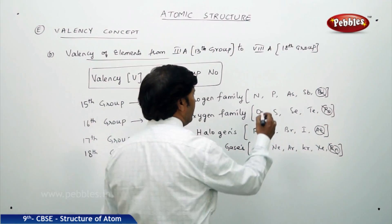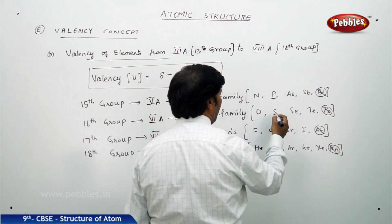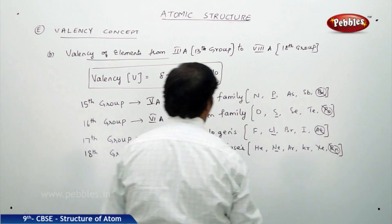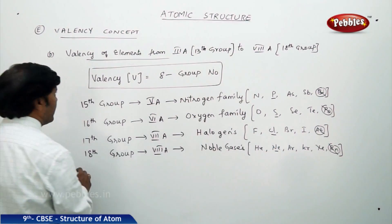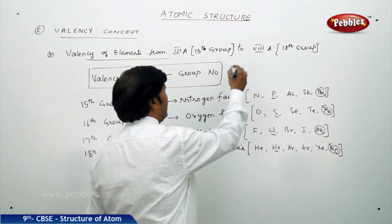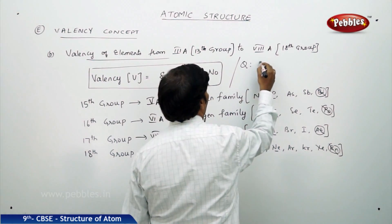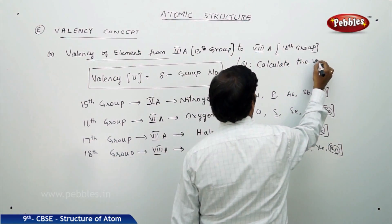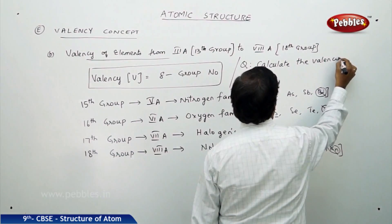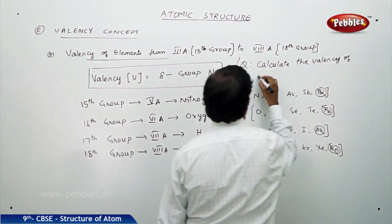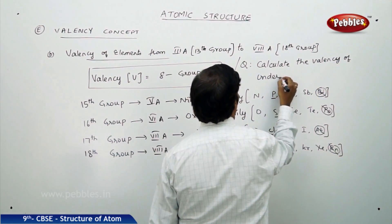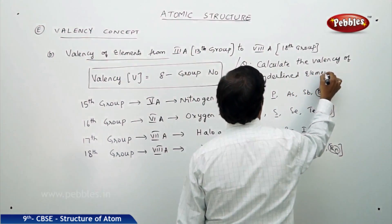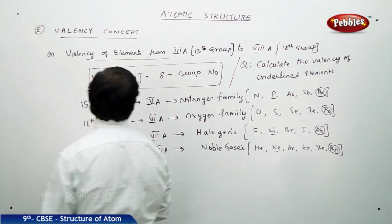But suppose if I am underlining phosphorus, sulphur, chlorine and neon. Calculate the valency, the question goes like this. Calculate the valency of underlined elements.